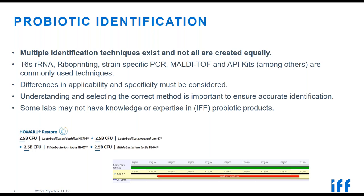To demonstrate why method selection matters: a product, 'How Are You Restore,' contains two Bifidobacterium lactis strains, BIO7 and BLO4. If you wanted to identify BIO7 in this blend and chose 16S rRNA sequencing, you would find that you can't uniquely identify BIO7 because BIO7 and BLO4 have a 100% identity match for the 16S region. This could give you a false positive — you may just be identifying BLO4. This is one simple example of why the correct method choice is really important.